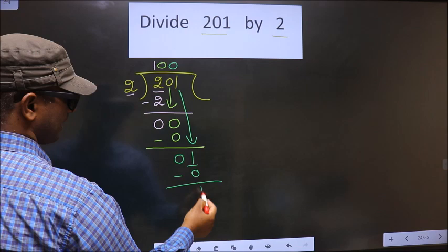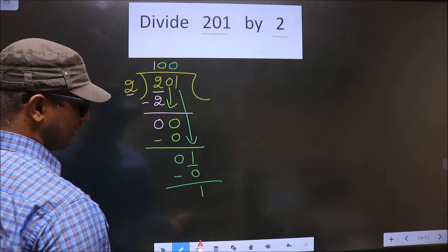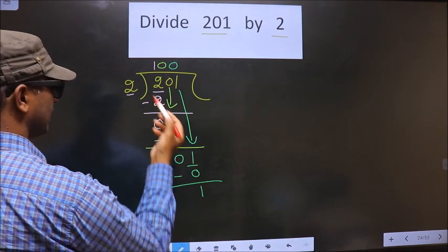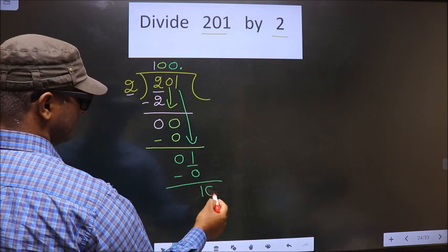Now, you subtract. Now, you get 1. Here, we did not bring any number down. Now, 1 is smaller than 2. So, now, you can put a decimal and take 0 here.